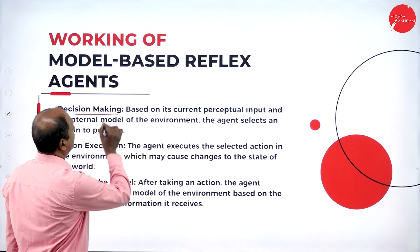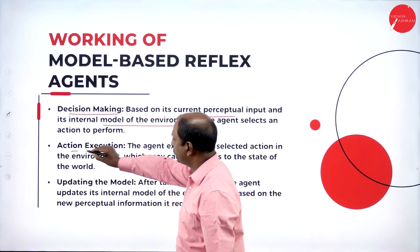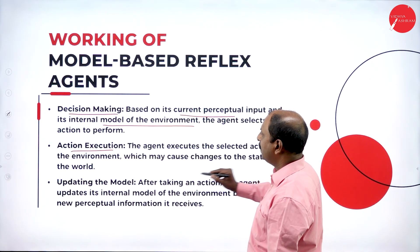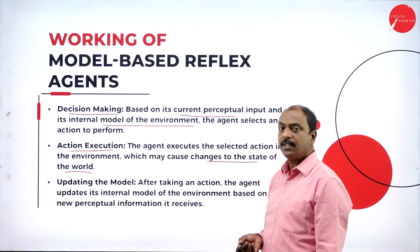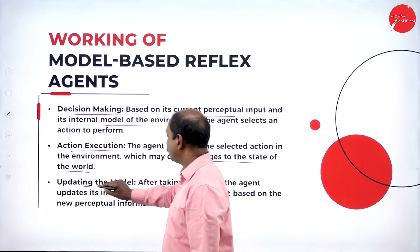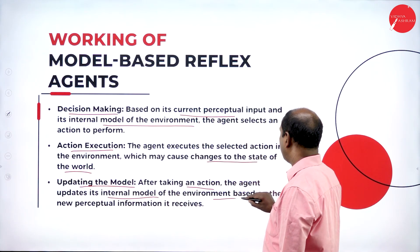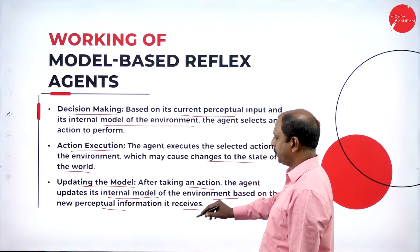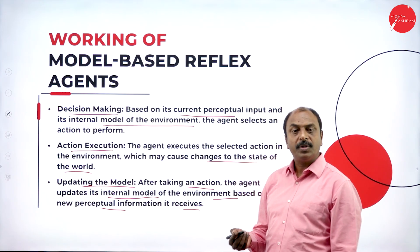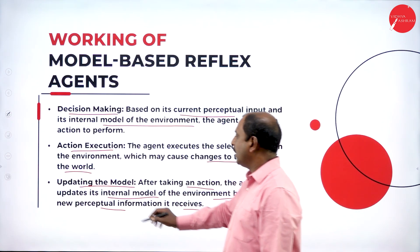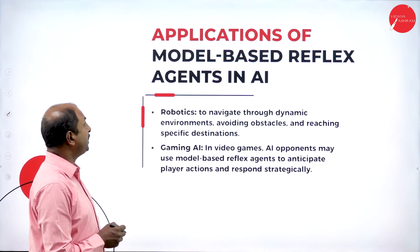Next is decision making — this is based on the current perceptual input and the internal model of the environment. Then action execution — the agent executes the action in the environment, which may cause changes to the state of the world, through the effectors. Finally, updating the model is an important component — after taking an action, the agent updates its internal model based on new perceptual information it receives, recording and storing the different types of models used for different types of environments.